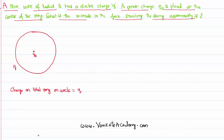So the total charge on the circle is Q. In the circle, the total angle is 2π. So charge per unit angle is Q by 2π.